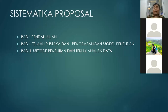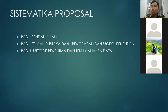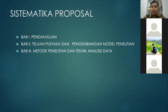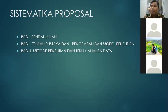Seperti tadi saya bilang, proposal itu sebetulnya hanya ada tiga. Yang satu pendahuluan — nanti isinya pendahuluan itu yang tadi ditambah biasanya ada tujuan dan manfaat. Sistematika proposalnya: bab satu pendahuluan. Yang kedua, telaah pustaka dan pengembangan model penelitian. Telaah pustaka berisi variabel-variabel yang akan kita gunakan berdasarkan penelitian-penelitian dulu itu seperti apa — baik variabel dependent sama variabel independent.